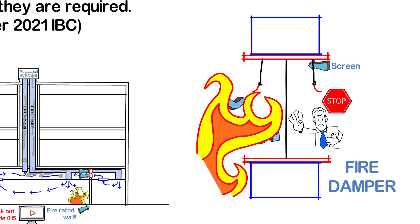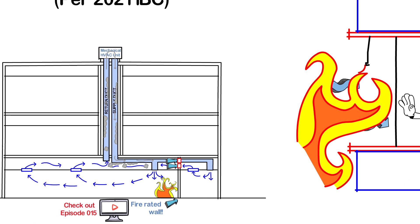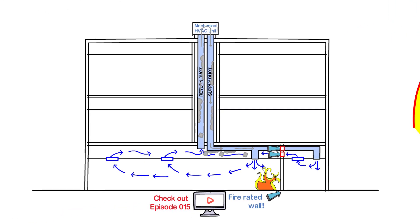By the way, just in case this wasn't clear already, let's go back to our building diagram for a second. The damper can be installed as part of the ducts, and it could also be in the wall as a standalone for the air transfer.